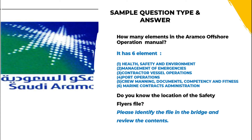Example question: how many elements are in the Aramco offshore operation manual? It has six elements. The first is health, safety and uniform requirement. Number two is management of emergencies. Number three is contractor vessel operation. Number four is port operation. Number five is crew manning, documents, competence and fitness. Number six is marine contract administration.